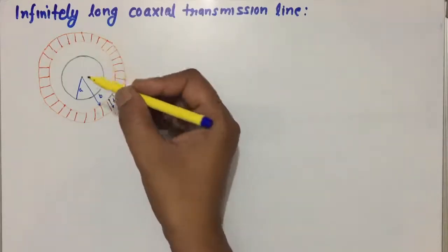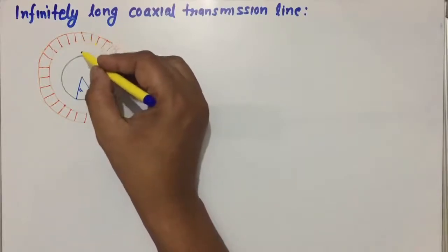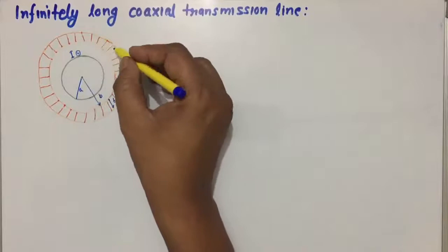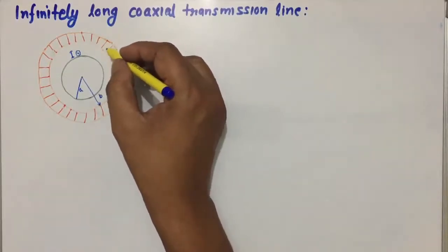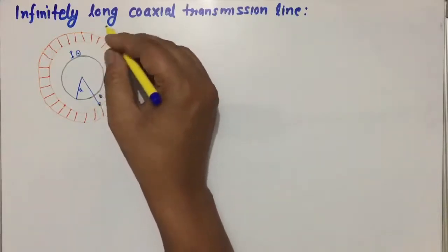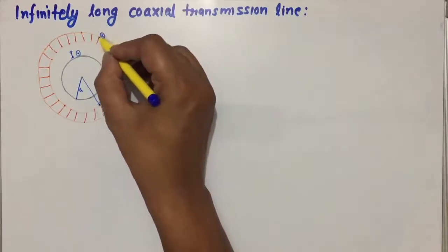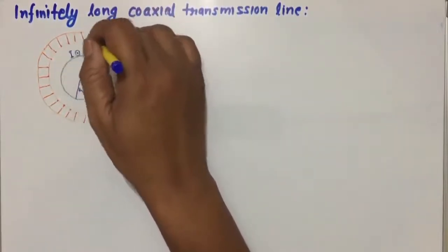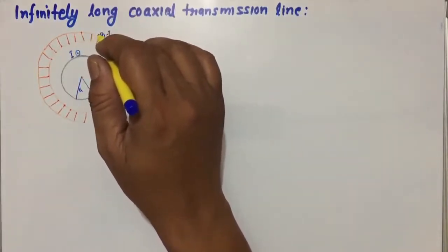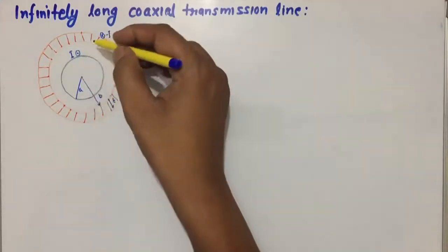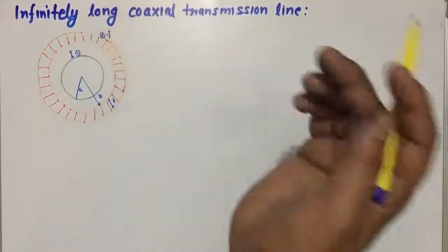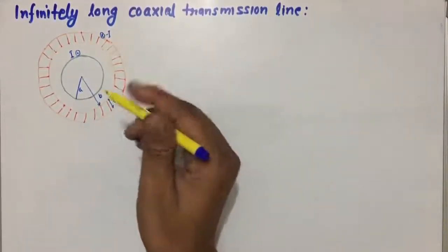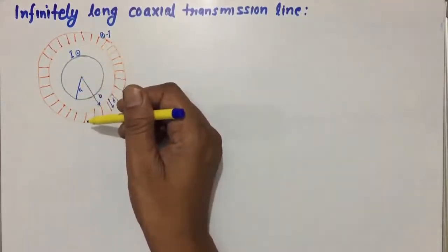If the inner conductor carries current I going inward, then the current in the outer conductor must be a return current in the opposite direction — if one is going in, the other must come out, so they carry opposite signs. This is the structural assumption, and we have to find the magnetic field intensity in different regions of the coaxial conductor.